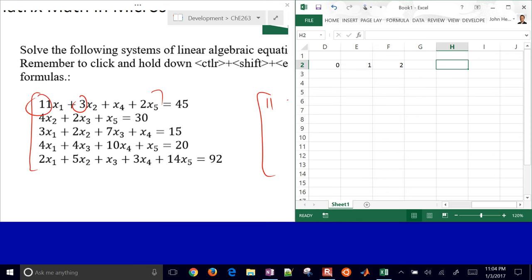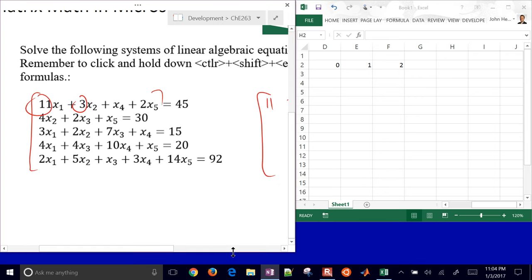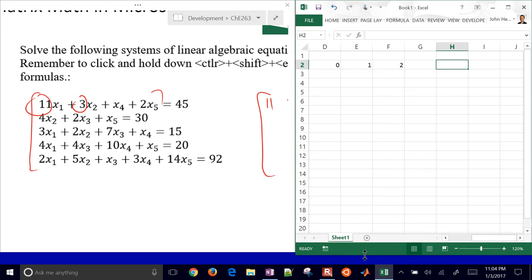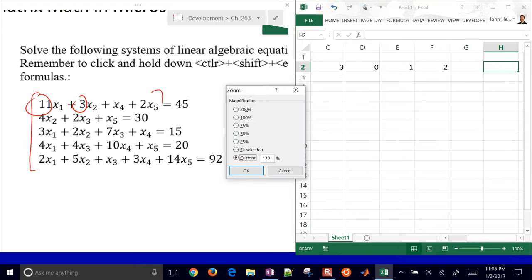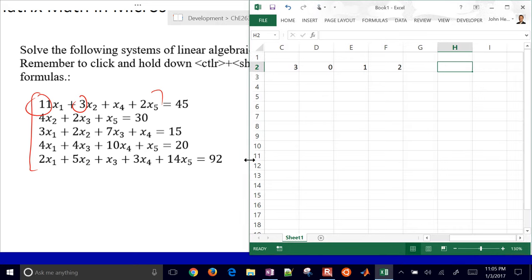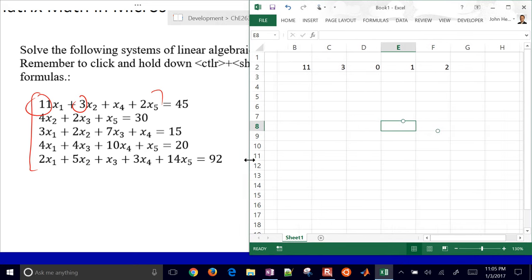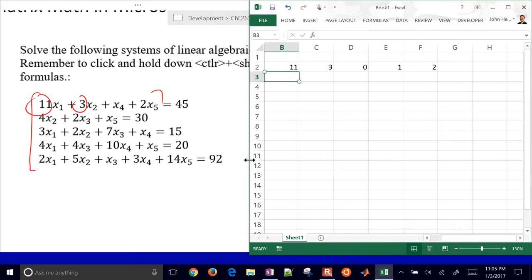I'm going to make this just a little bit bigger here, and here as well, make this zoom in. For my second equation, I have a zero here, I have a four for the x2. For the x3, I have 2, 0, and 1, and let's keep going down, 3, 2, 7, 1, and 0.